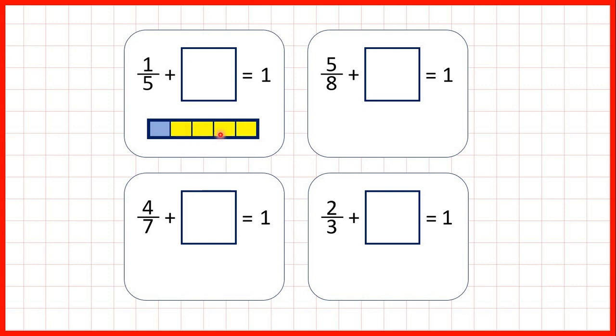Well if we color in the rest of our fraction bar in yellow, we can see that 4/5, so 4 parts out of 5 are now colored in yellow. So 1/5 plus 4/5 is one whole. Because 1/5 of our fraction bar is blue, 4/5 is yellow and that means that the whole fraction bar is now colored in.